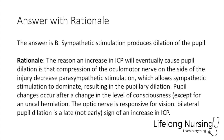The answer is B. Sympathetic stimulation produces the dilation of a pupil. This is due to an increase in intracranial pressure on the site of the injury that causes the compression of the ocular motor nerve. This injury decreases the parasympathetic stimulation, which allows the sympathetic stimulation to dominate, resulting in pupil dilation.